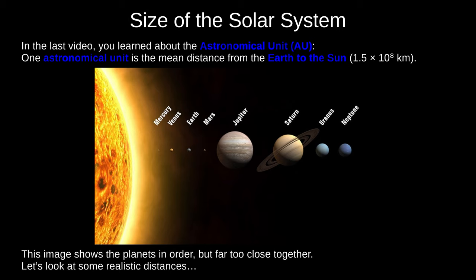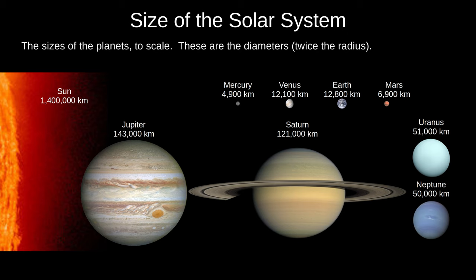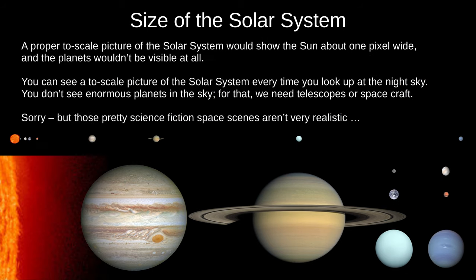I'm sure you've seen pictures like this before — it shows the planets in order, but they're far too close to each other. Let's give them some realistic distances. This shows the planets at their correct distances from the Sun, scaled down with their distances given in astronomical units, but the sizes aren't to scale. Now let's see the planets drawn to scale. I've labelled the planets with their diameter, or twice their radius. We can barely fit 2.5 Jupiters on screen from top to bottom, while Mercury is just 16 pixels wide. A proper two-scale picture of the solar system with accurate sizes and distances would show the Sun about one pixel wide, and at HD resolution the planets wouldn't be visible at all. You can see a to-scale picture of the solar system every clear night — we don't see enormous planets in the night sky, despite what science fiction movies would have us believe. To see the planets in detail, we need telescopes or spacecraft.